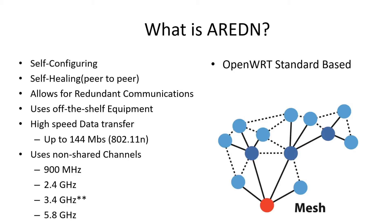It uses off-the-shelf equipment — most of it you can buy for $50 to $60 or less. It's very inexpensive compared to even the portable radios we typically buy. High-speed data transfer: we get the 802.11n protocol and can get up to 144 megabytes per second. You can put a lot of data on that — you don't want to abuse it, but you can serve a lot of services on your network.